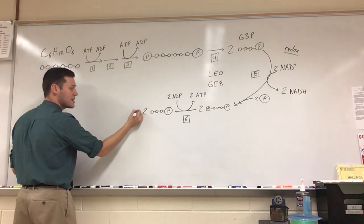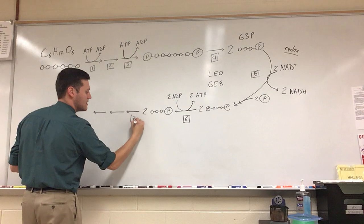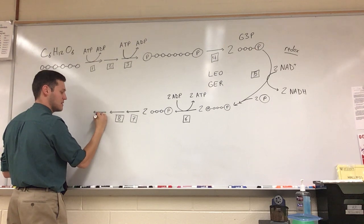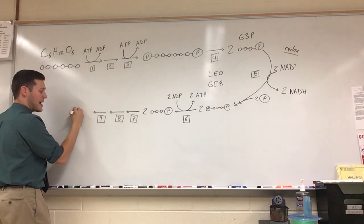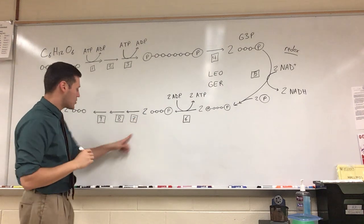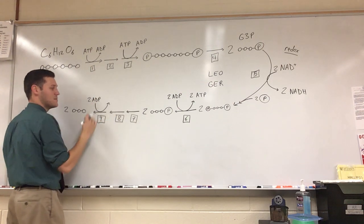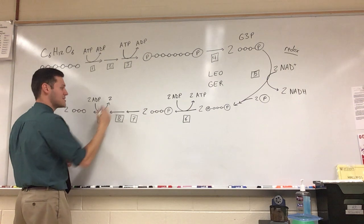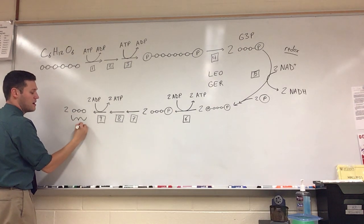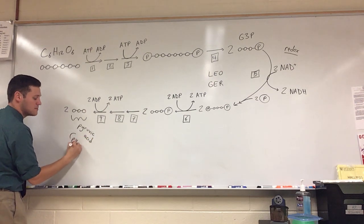And then through a series of steps, three steps, one, two, three. This will be step seven, step eight, and step nine. We will end up with pyruvic acid, a three carbon molecule, and two of those. And that's because during step nine, two more ADPs, adenosine diphosphates, come in, pick up those phosphates, and become two ATP molecules. And we're left with two molecules of pyruvic acid, also called pyruvate.